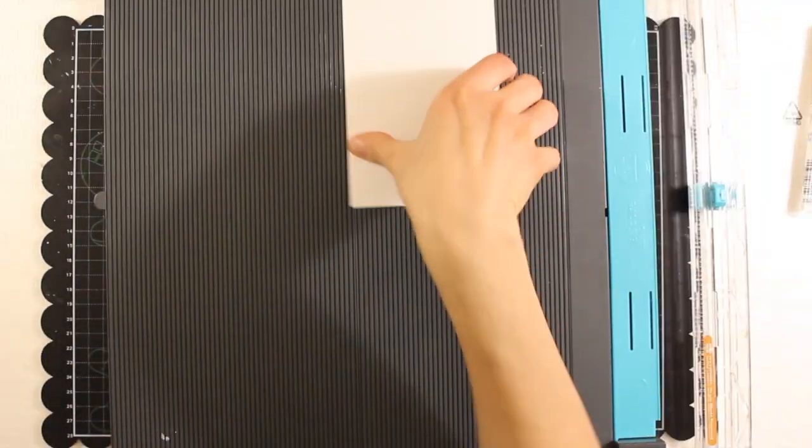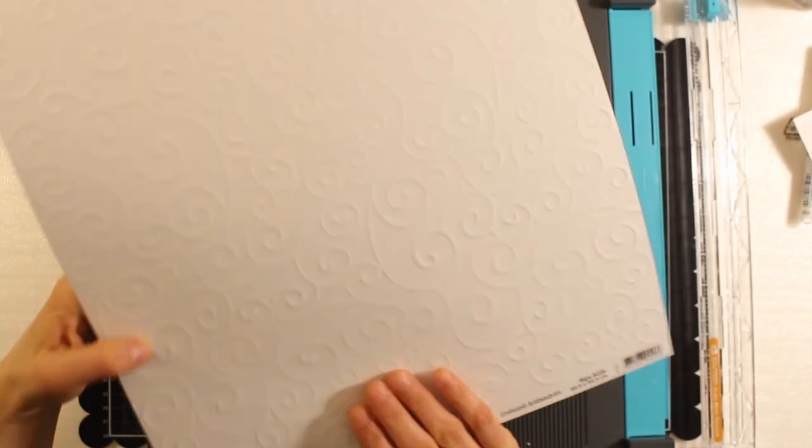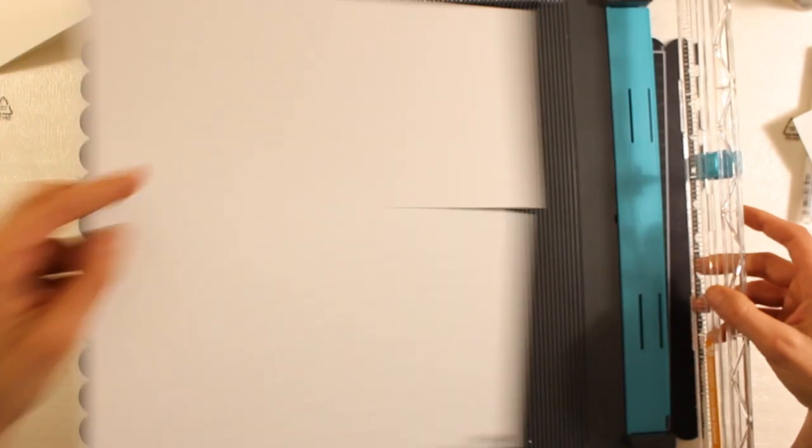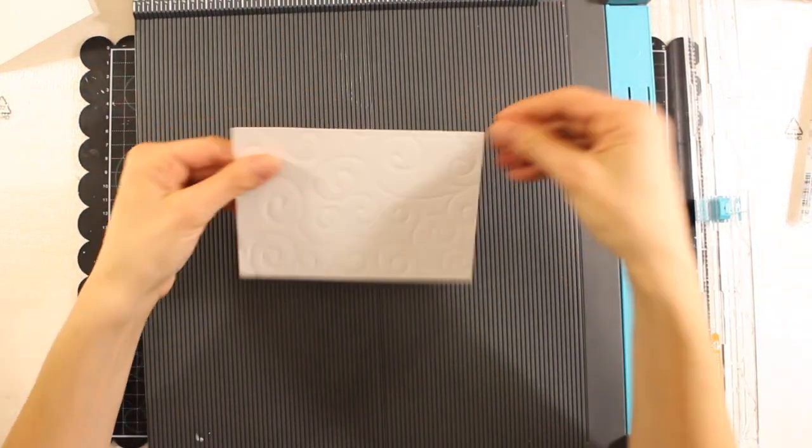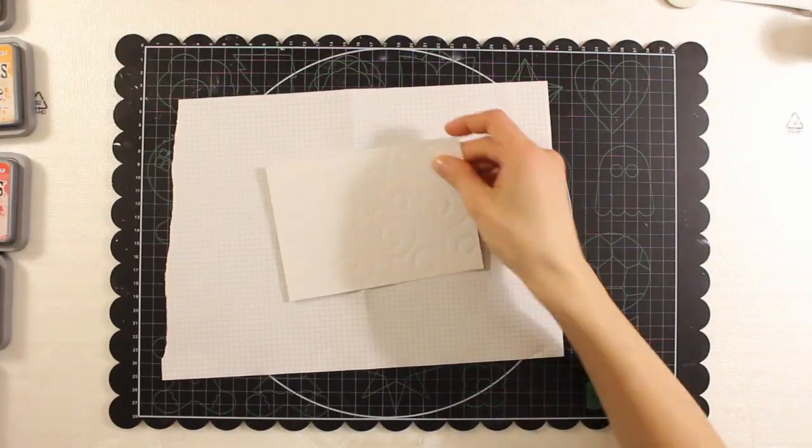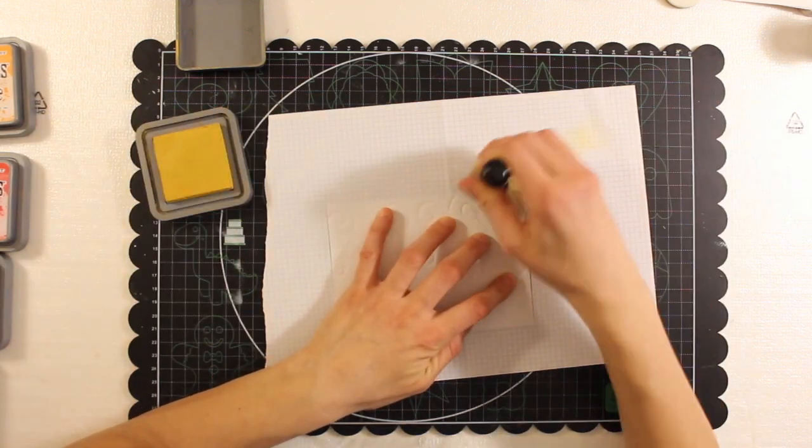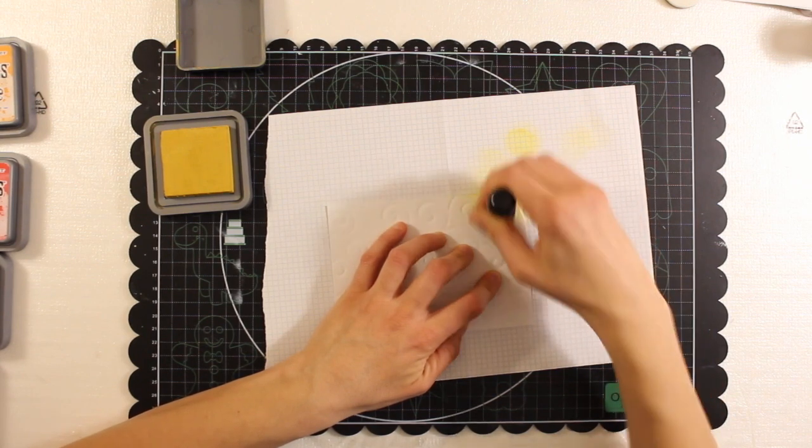Now it's time to prepare the backgrounds for my three cards, which will be about 6 by 4 inches. So I'm cutting a rectangle from a white cardstock with embossed dots, another one from a white cardstock with embossed swirls and the third one from a sparkling light grey cardstock. Now I'm going to color two of these backgrounds using my distress oxides.